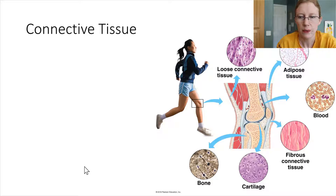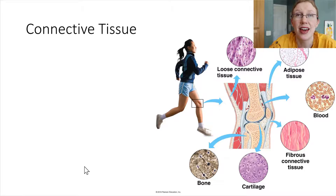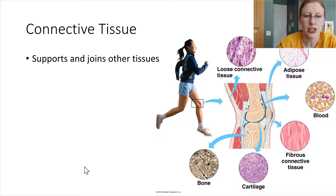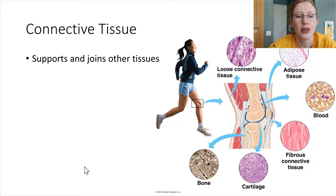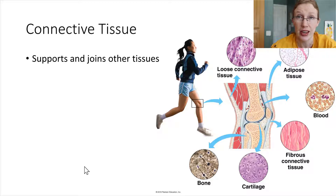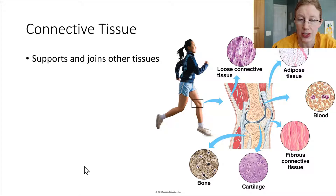Connective tissue does what its name implies — it connects other things together and provides general support for other tissues. Going back to our skin example, right underneath the epithelial tissue, right under the skin, there is a layer, kind of a padding layer, of connective tissue.